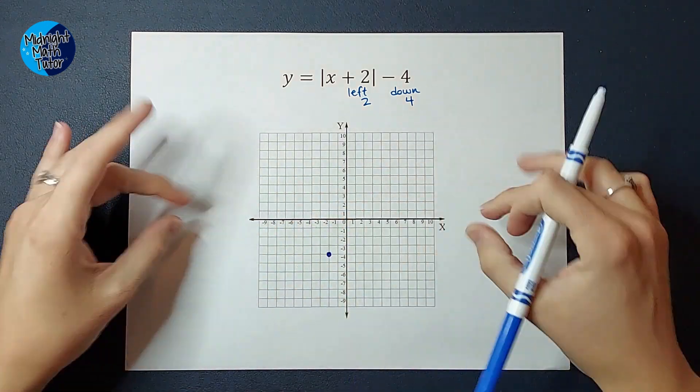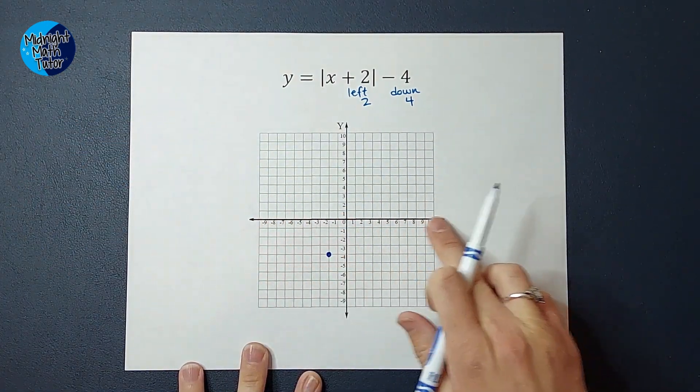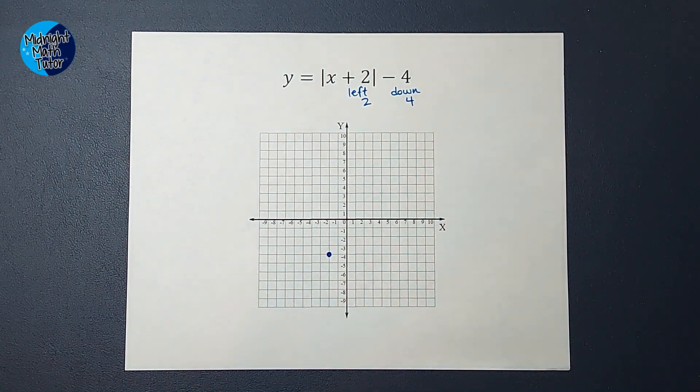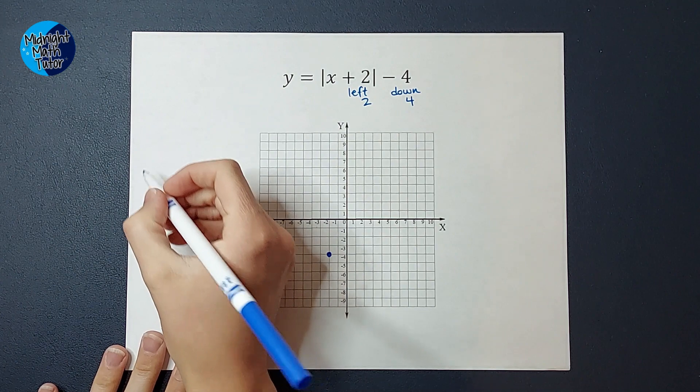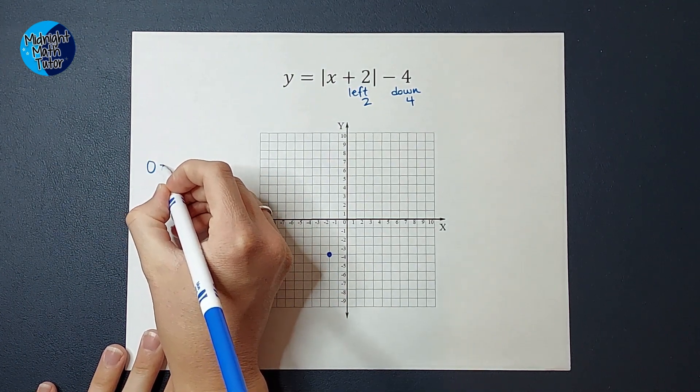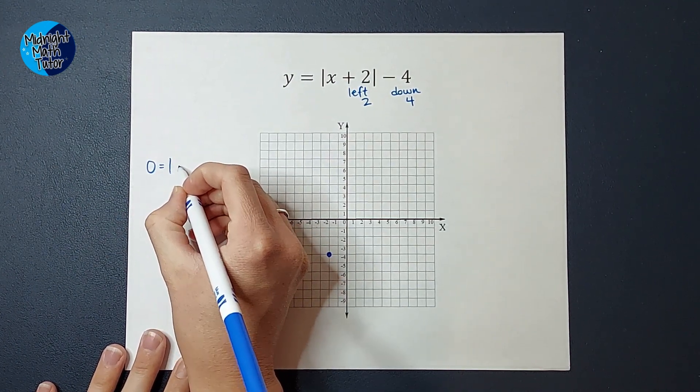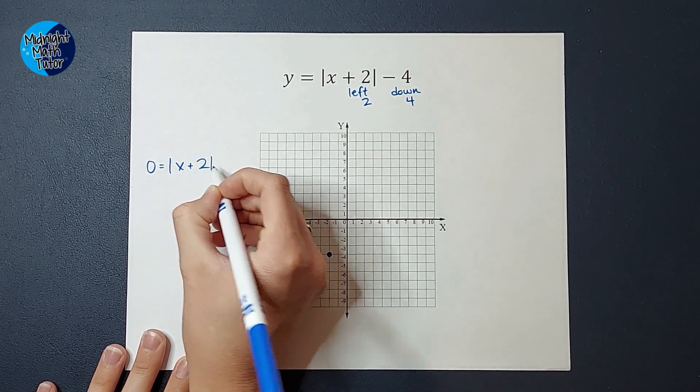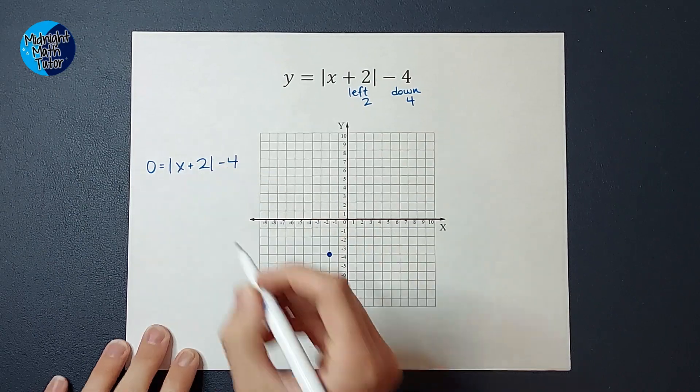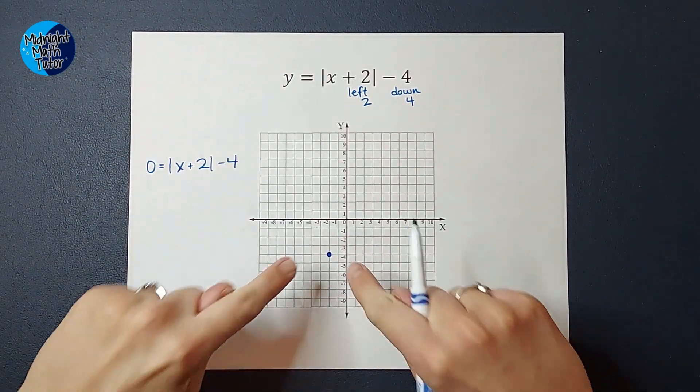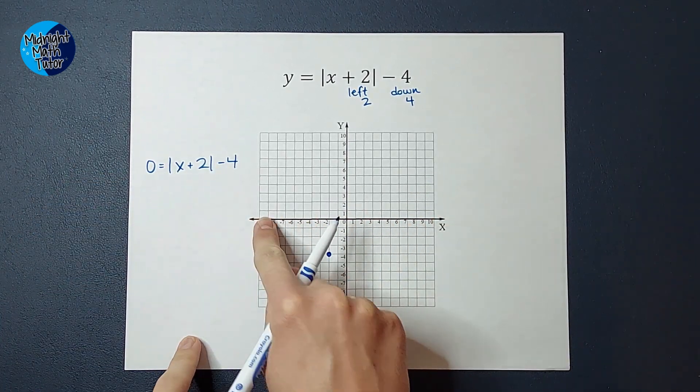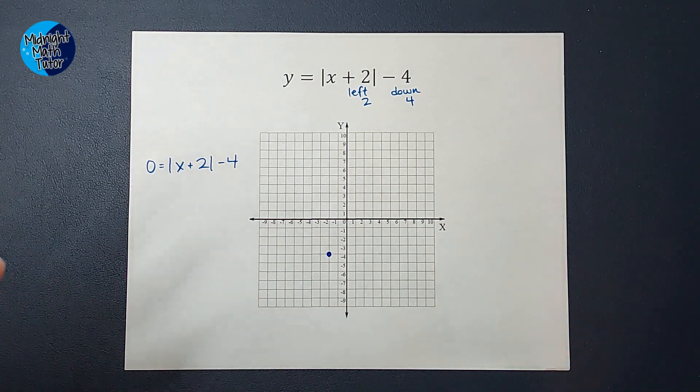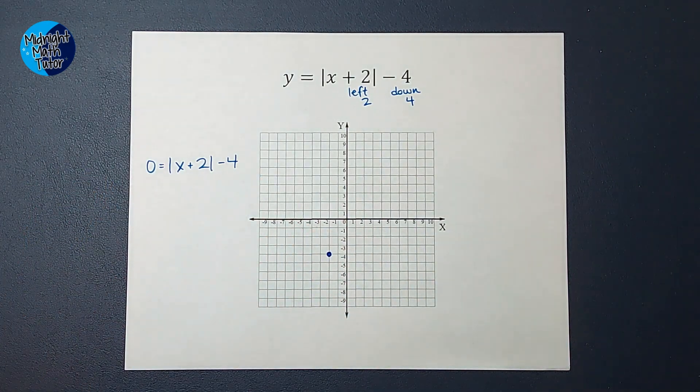So with this one, I know it's going to open up. So I kind of want to know where it's going to cross that X axis. So that is when Y equals zero. So we're going to plug in Y equals zero and see what we get. So right here, we're going to do zero equals the absolute value of X plus two minus four. Now guys, this is one of my favorite things about math. When we think about this, we know it's going to be a V. So it's going to cross my X axis twice. So I should get two answers out of this one problem. Let's see what happens.